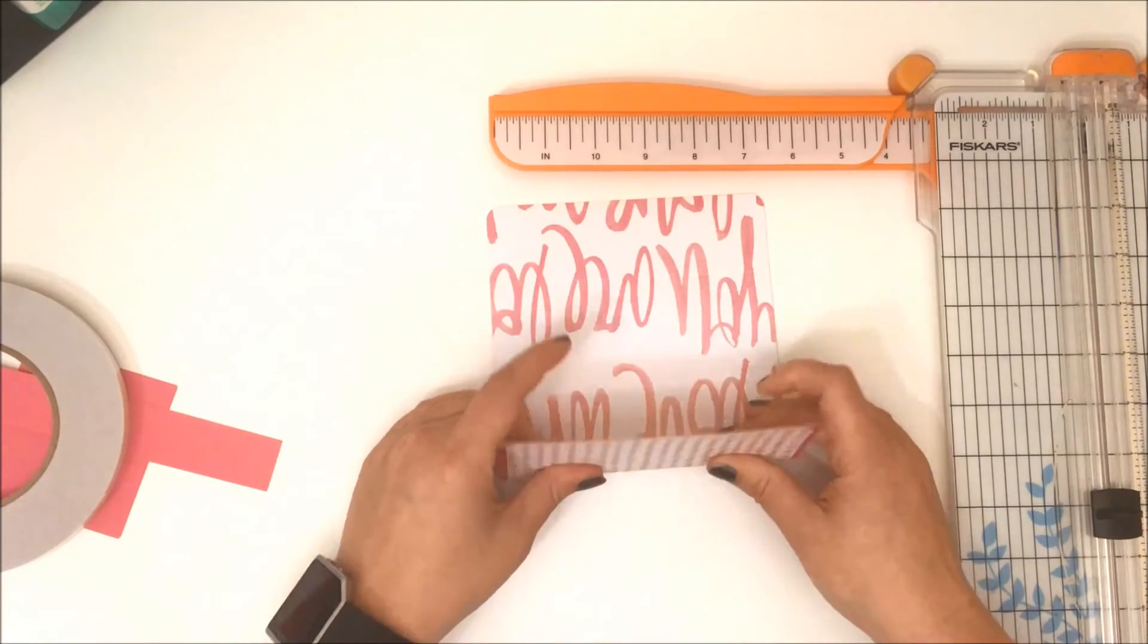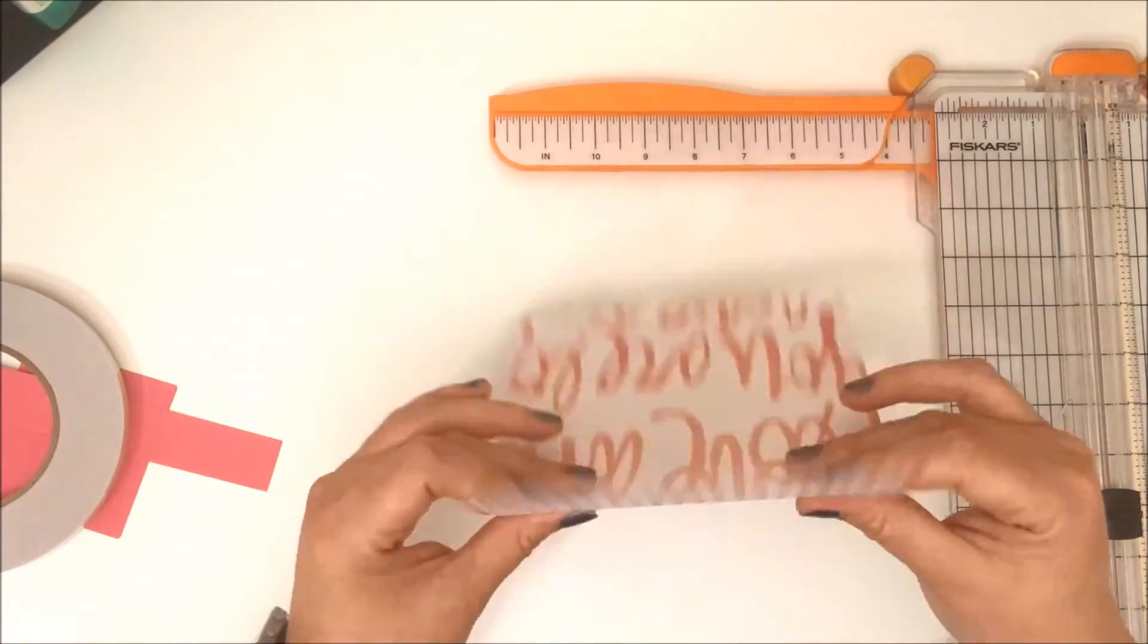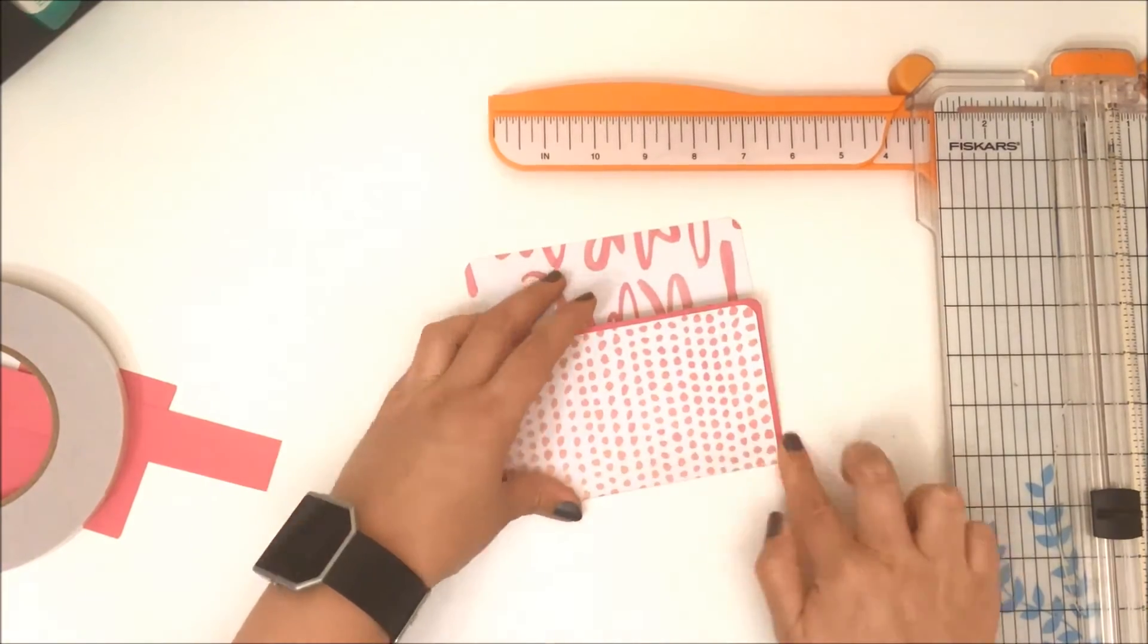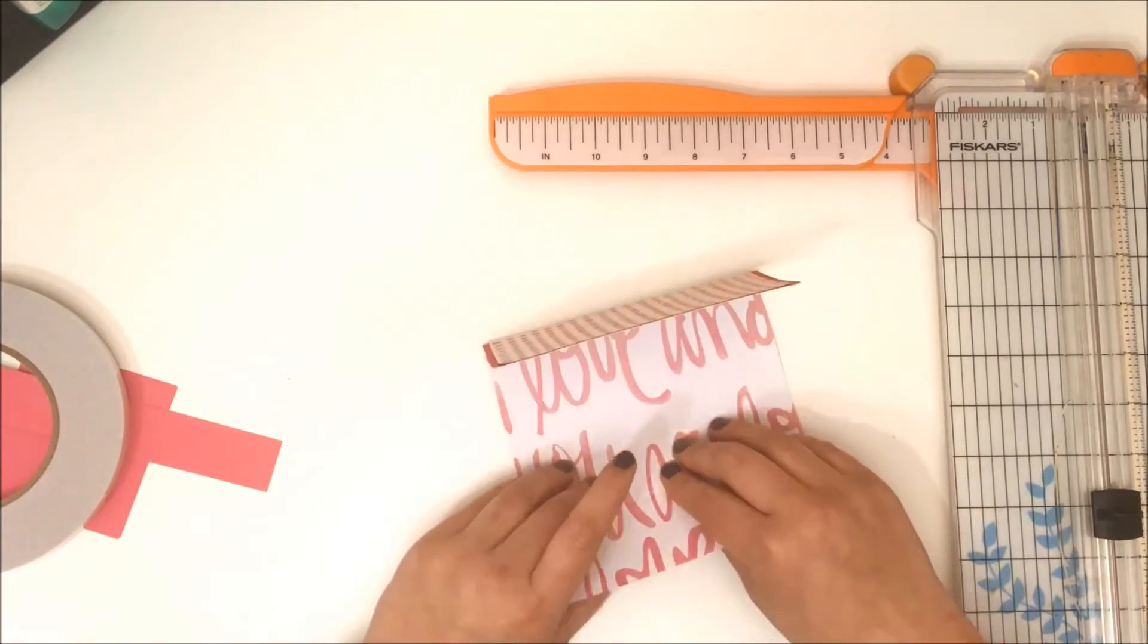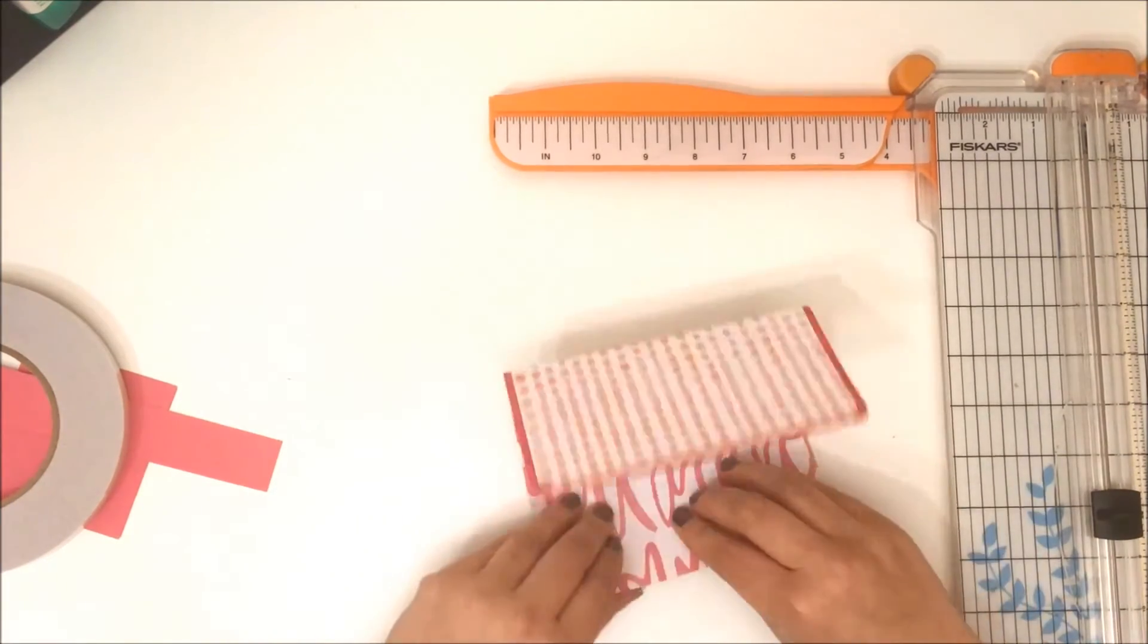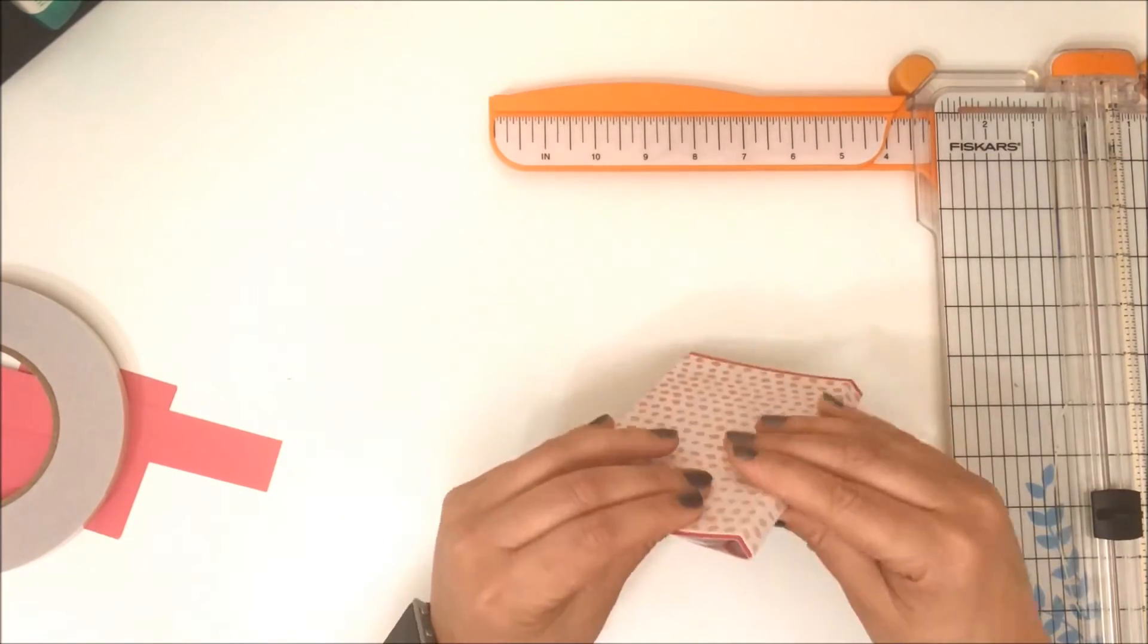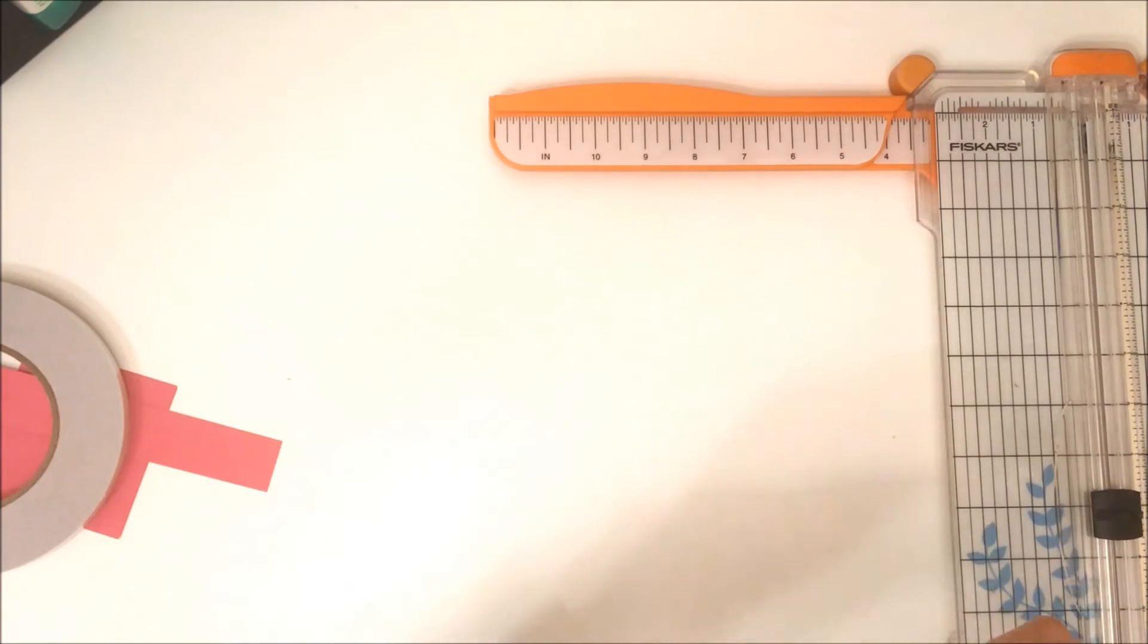Then I'm just folding on those score lines, folding nice and firmly because I had those two sheets of cardstock together and it was quite thick. I'm just making sure I fold quite firmly. If you had a bone folder, you could definitely use that. So that's what the outside of the wallet looks like.